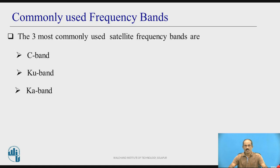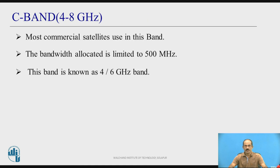The commonly used frequency bands are three: C band, Ku band, and K band. The C band frequency range is around 4 to 8 GHz. Most commercial satellites are used in this band. The bandwidth allocated for the C band is around 500 MHz. This band is also known as the 4 by 6 GHz band.